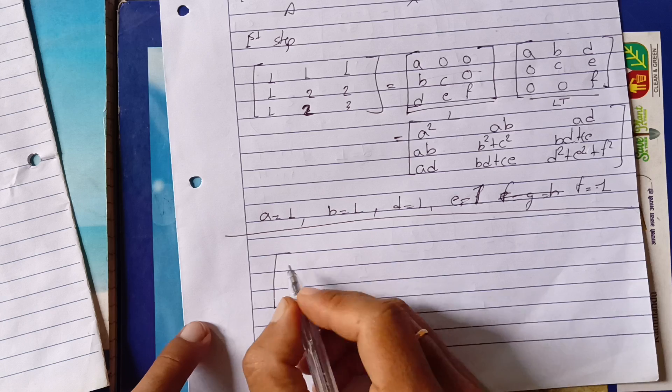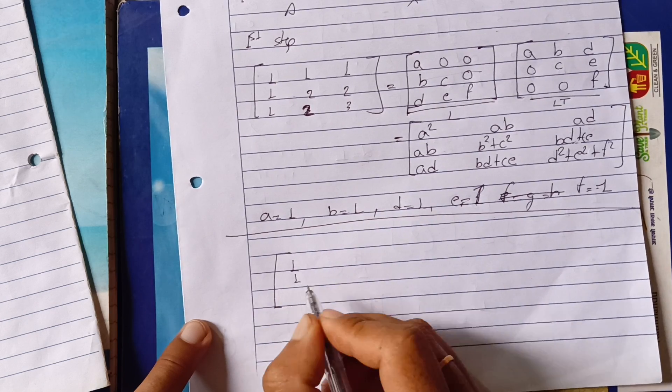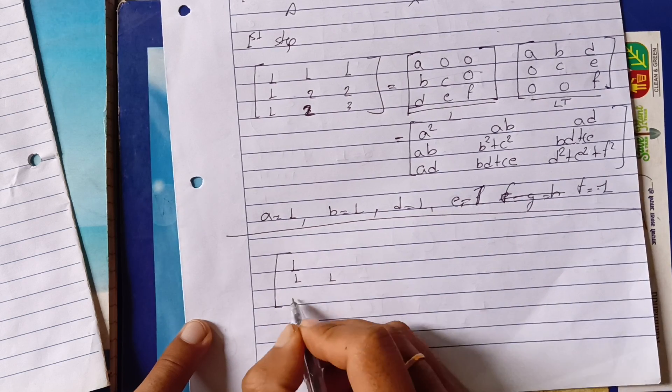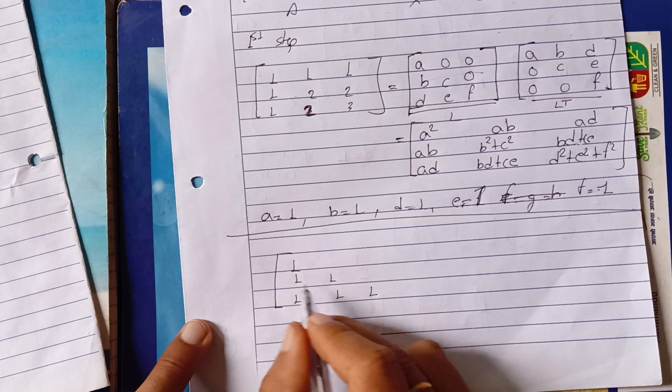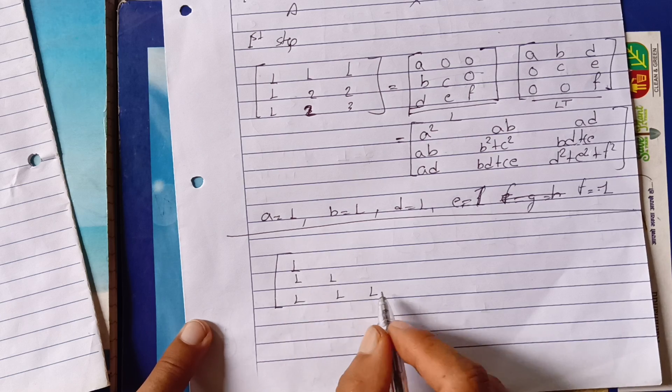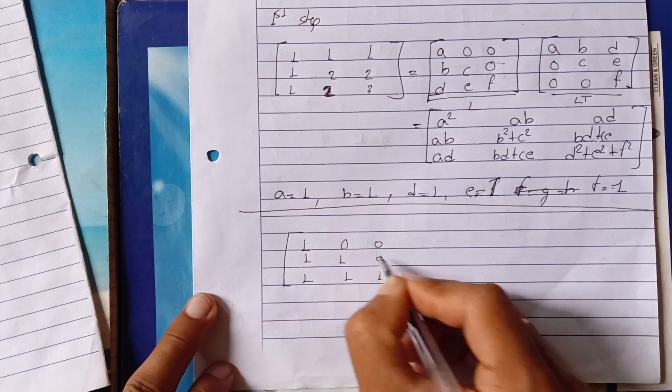So it's easy. The entries are A, B, C, D, E, F for the lower triangular matrix L, and A, B, C, D, E, F for L transpose. Here we go — the Y matrix.